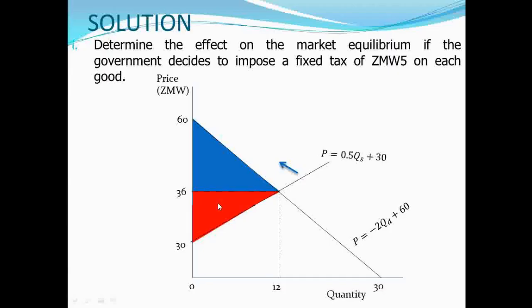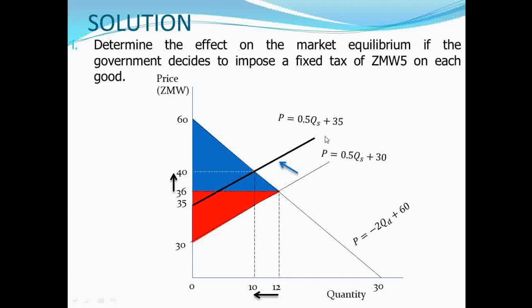With our new supply function, the equilibrium price increases from 36 to 40 and equilibrium quantity reduces from 12 to 10. Therefore, the effect of a fixed tax of 5 Kwacha on the market equilibrium is that the equilibrium price increases by 4, from 36 to 40 Kwacha, while the equilibrium quantity reduces by 2, from 12 units to 10 units.